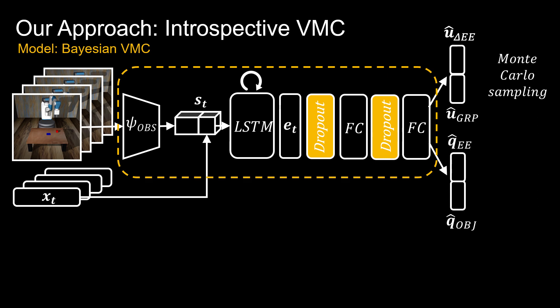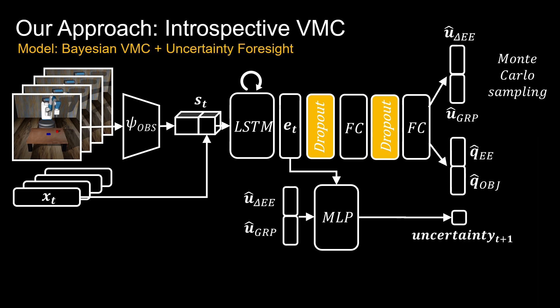We propose uncertainty foresight that takes as input the embedding of time step t, concatenates it with an action, and regresses to the uncertainty of time step t plus one.